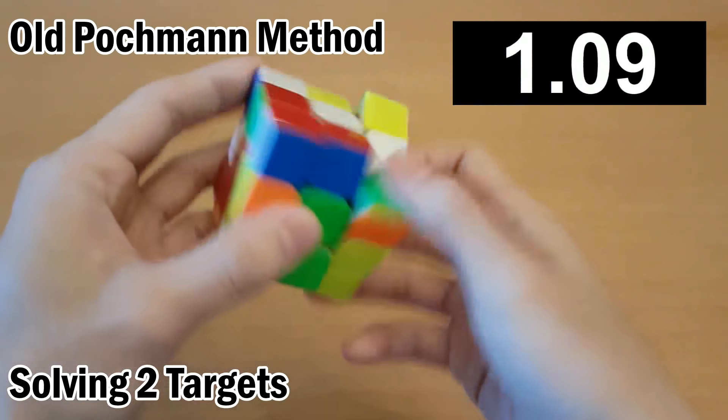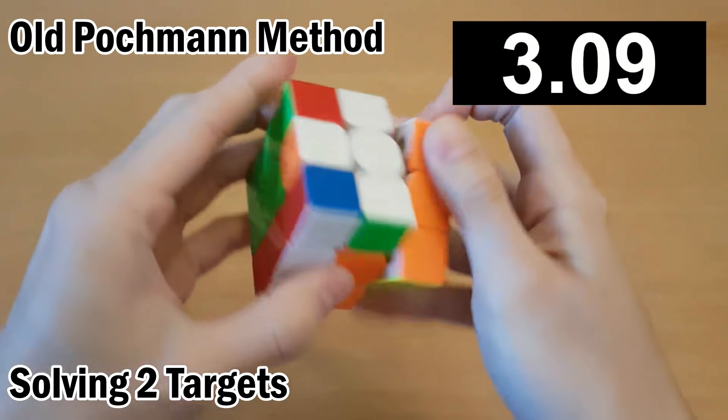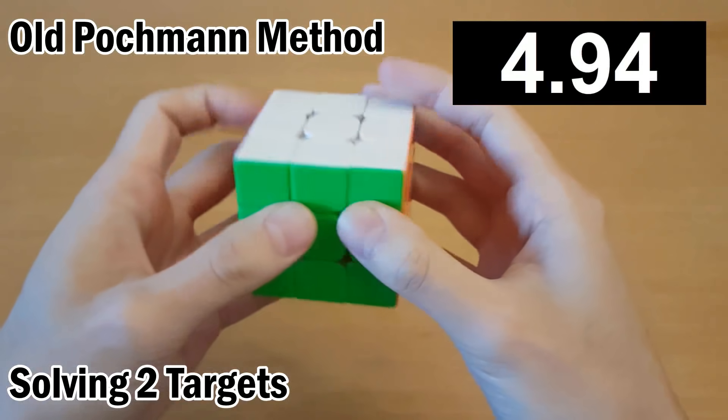The M2 method for blindfolded edges is faster than the old Pogman method, but you can optimize it to be even faster.